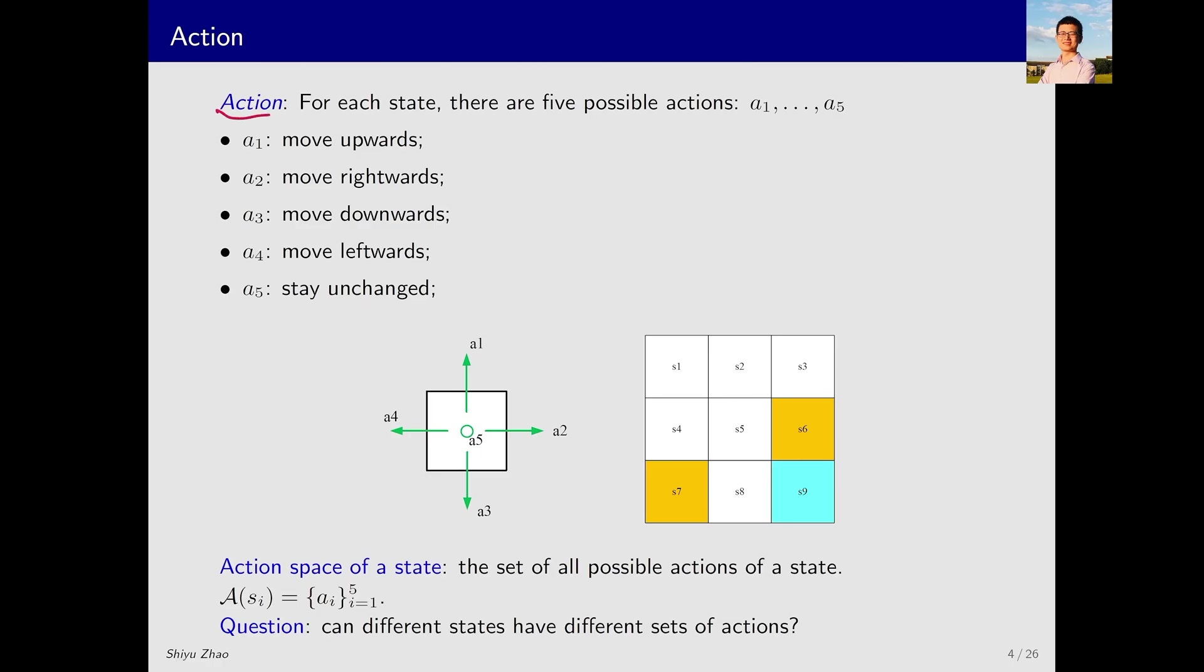The next concept, action, is also very basic. What is an action? In each state, there is a series of actions that can be taken. In this example, there are five actions, from A1 to A5. Specifically, A1 is moving up from the current state, A2 is moving right, A3 is moving down, A4 is moving left, and A5 is staying still, which is represented by a circle.